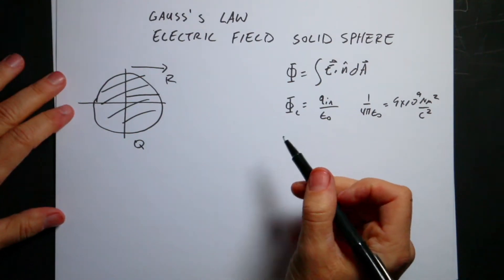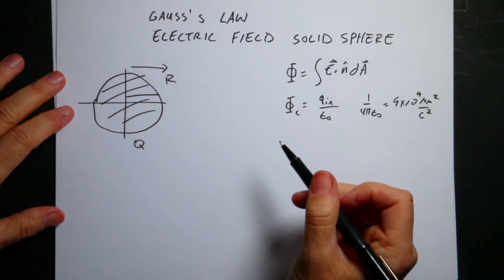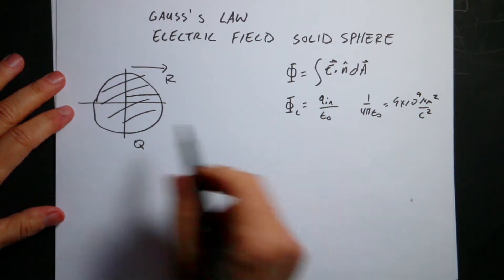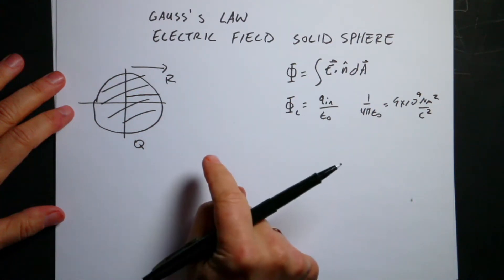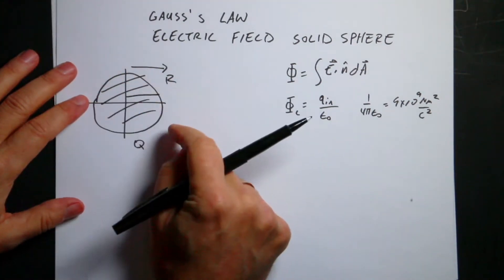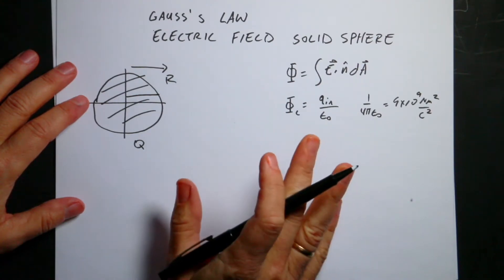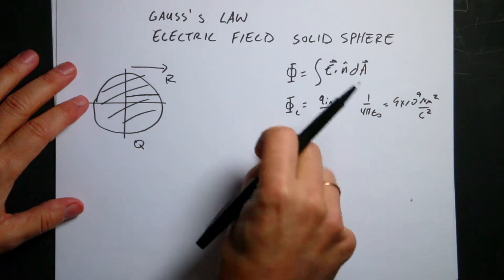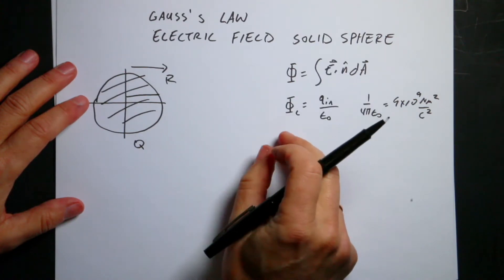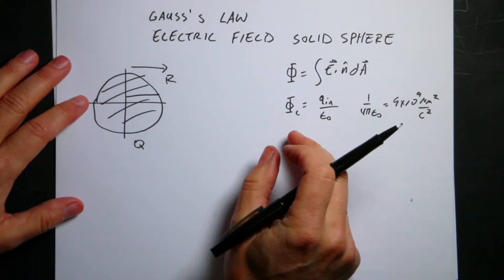I am going to solve a bunch of Gauss's Law problems. This is using Gauss's Law to find the electric field due to a solid sphere. Let me explain Gauss's Law briefly. It's kind of complicated, and I think a lot of times it's introduced too early because it really deals with electric field and flux.